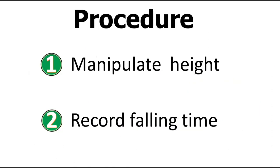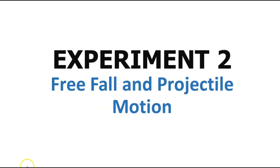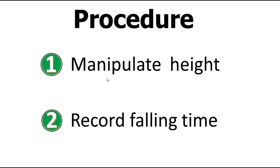If you have read the procedure, you will realize that in the experiment you need to manipulate the height — height is going to be the manipulated variable. You are then going to record the falling time, which is going to be the responding variable. These two values need to be recorded in a table.